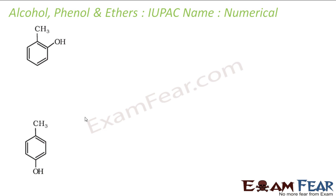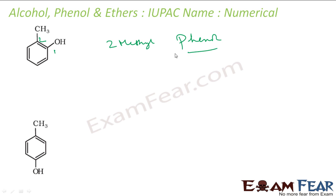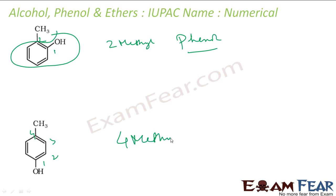Let's take this example. This is a phenyl group and I have a methyl group attached. This is position 1 and this is position 2. So at position 2, I have a methyl group attached — 2-methylphenol. Phenol is my primary group; at position 2 I have a methyl group attached. Similarly here, at position 4 I have a methyl group attached to phenol, so it will be 4-methylphenol.